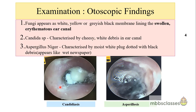Coming to the otoscopic findings of otomycosis: the fungal colonies appear as a mass of whitish, yellowish, or grayish-black colored membrane lining the swollen, erythematous ear canal. The color of the debris may vary from person to person — whitish, yellowish, or grayish-black. Otomycosis invariably involves the deeper part of the ear canal.